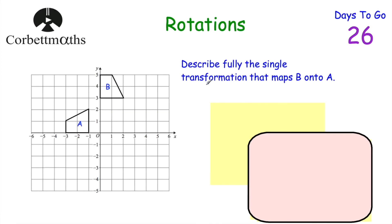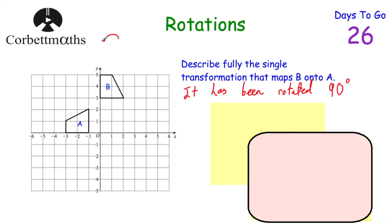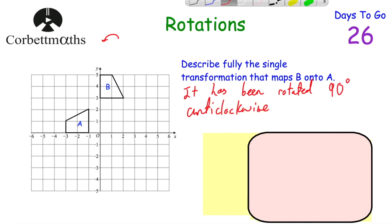To describe the transformation that maps B onto A: first, state it's a rotation — that's one mark. Then determine the degrees: you can see this vertical side has become the base, so it's been rotated 90 degrees. Going from B to A, the direction is anti-clockwise. So so far we have: rotated 90 degrees anti-clockwise. We still need one more thing — the centre of rotation.